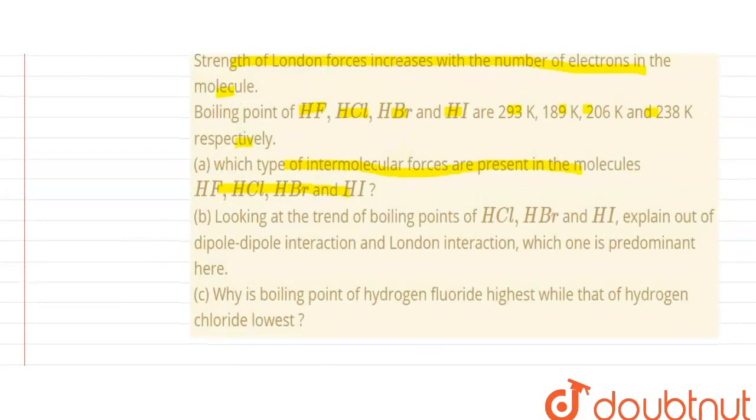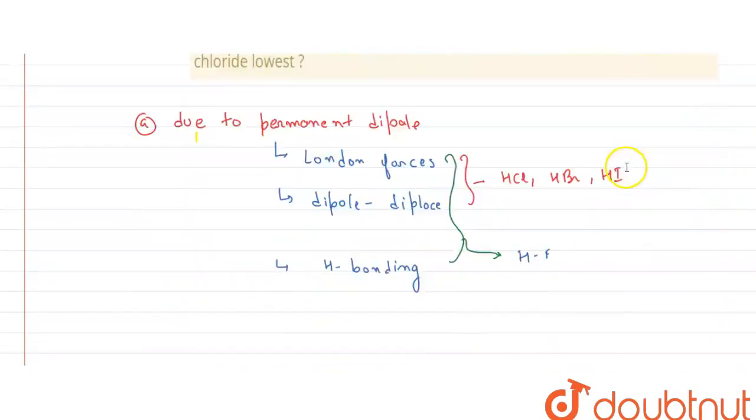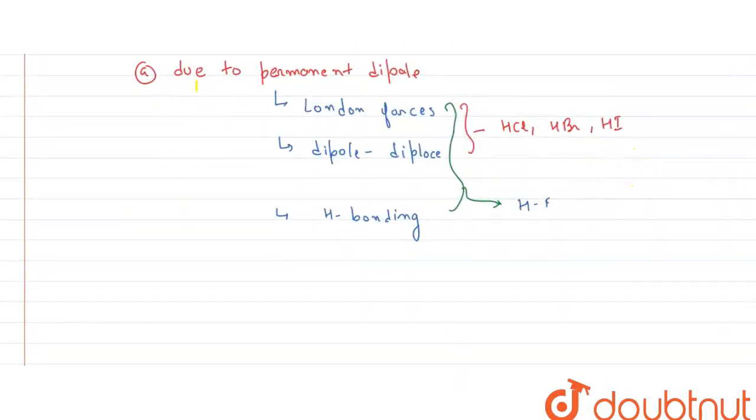Now the second part is looking at the trend of boiling points of HCl, HBr and HI. Explain out of dipole-dipole interaction and London interaction which one is predominant here. So first of all, let us look at the trend of boiling point. So it says that HCl is 189, HBr is 206 and HI is 238. The trend in boiling point is HCl is least followed by HBr and the highest is of HI.